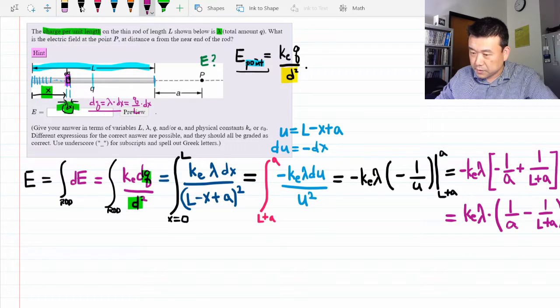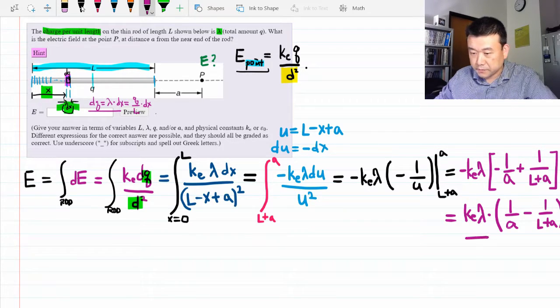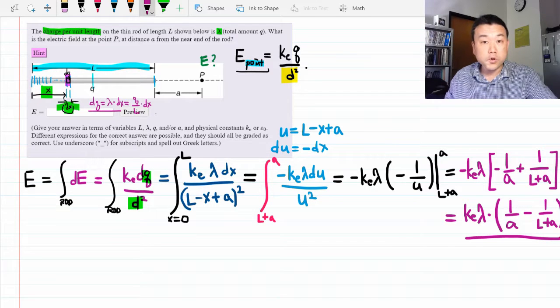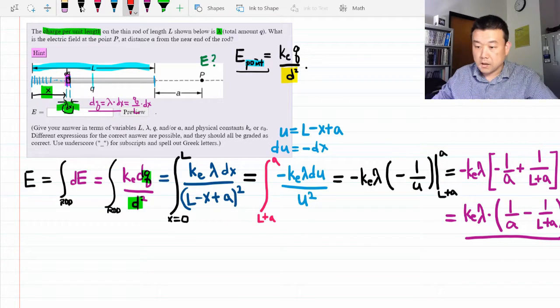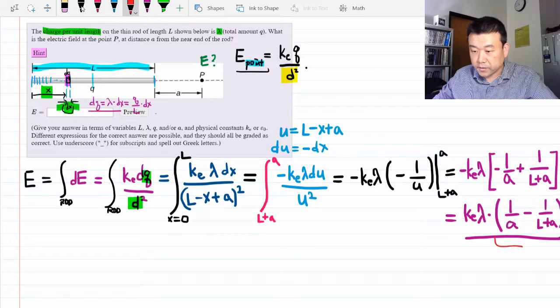Then I have Ke lambda times 1 over A minus 1 over L plus A. And it doesn't really simplify much beyond here. So this is the answer.